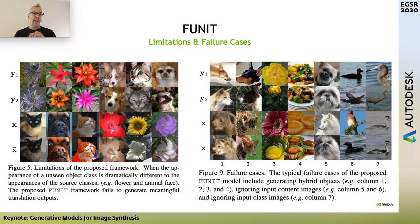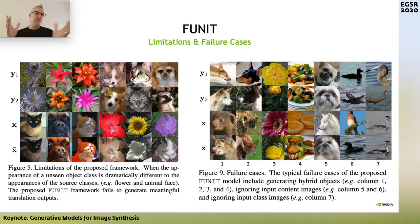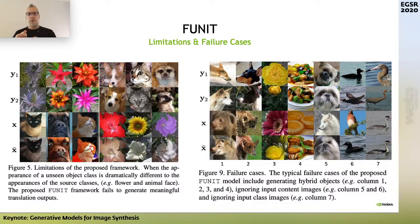There are some limitations and failure cases. When the appearance of the unseen object is too different — for example, translating flowers to animals — it doesn't make sense and the network can't do anything with it. Sometimes it fails to translate at all, ignores the content or class image, or accidentally creates hybrid images. Overall though, it's surprising how well this works.